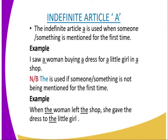The indefinite article 'a' is used when someone or something is mentioned for the first time. For example: 'I saw a woman buying a dress for a little girl in a shop.' When something is mentioned for the first time, we use the article 'a'.